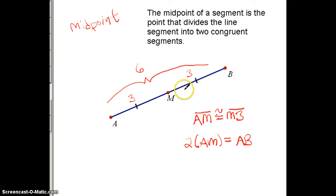You could also double MB. Doubling three would get you six, so you could double MB, and that would also give you AC.